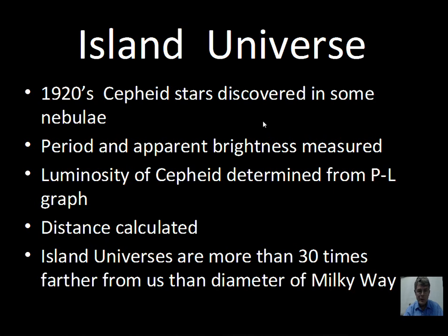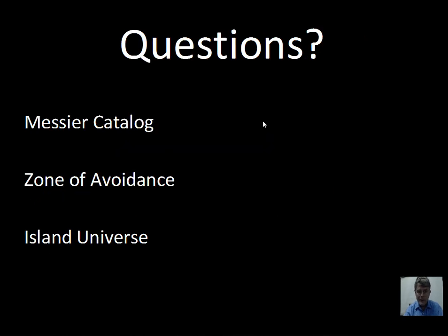In future videos we'll talk about the distribution and spacing between galaxies. To summarize: the Messier Catalog is a list of objects that are not all galaxies — some are inside our galaxy, like open clusters, planetary nebulae, and globular clusters. The zone of avoidance gives a clue that some nebulae are outside our galaxy, blocked by dust in the Milky Way. The island universe debate was settled by finding Cepheid stars in these galaxies, calculating accurate distances, and confirming they are much further away than the size of the Milky Way.